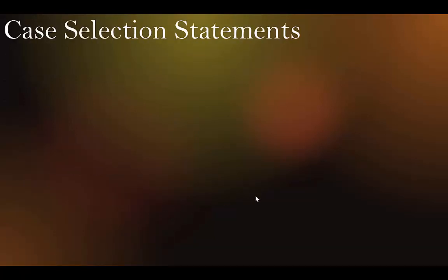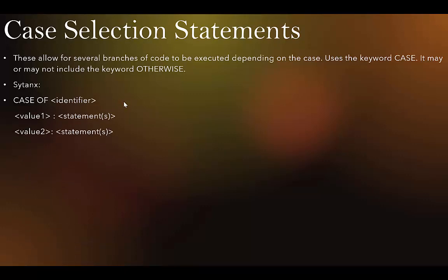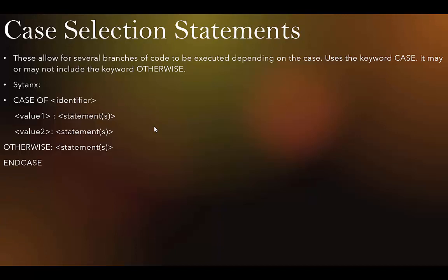CASE statements are your second type of selection statement. They allow several branches of code to be executed depending on the case. They use the keyword CASE OF followed by the identifier — the variable you're checking — then values and their corresponding code. Optionally you can use OTHERWISE for a default action. You close with ENDCASE, which is one word.